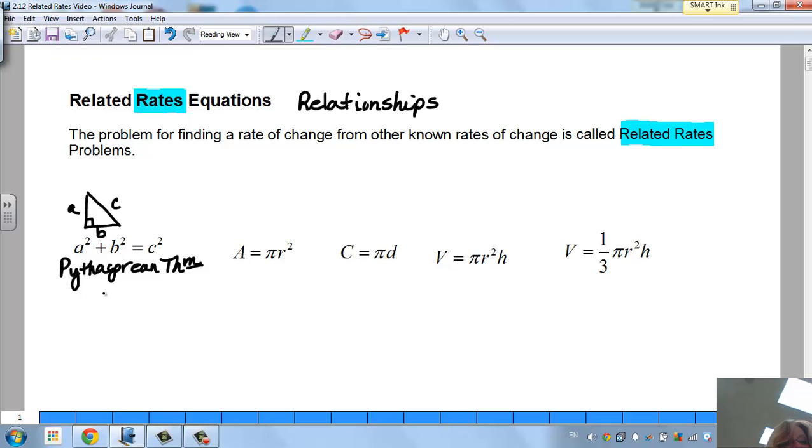There is our first one. We have a right triangle here, and this is the Pythagorean theorem. So this is when you'll use this a lot.